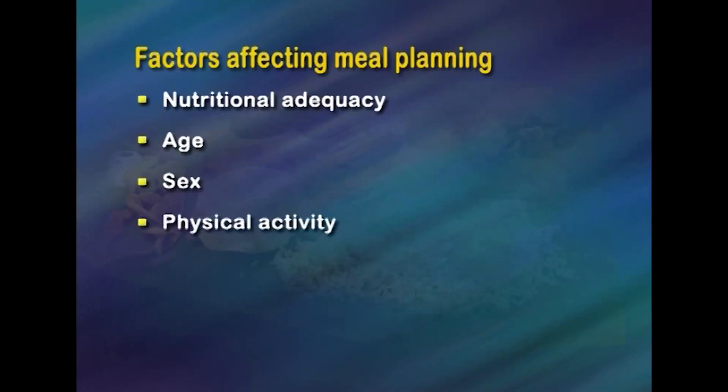Sex: Sex is another factor which determines dietary intake. The dietary requirement of adolescent and adult males is more than their female counterparts. Physical activity: The kind of work a person does affects the kind and amount of food they need. Recommended dietary allowance is different for people engaged in different activities. A laborer not only eats more in quantity but needs more energy because he is engaged in hard work.